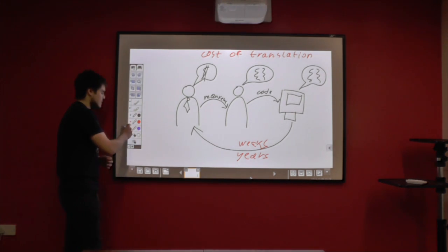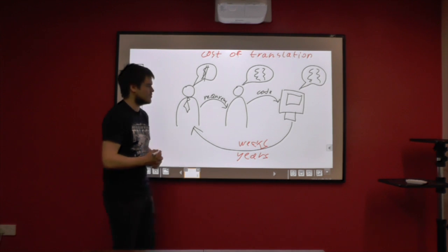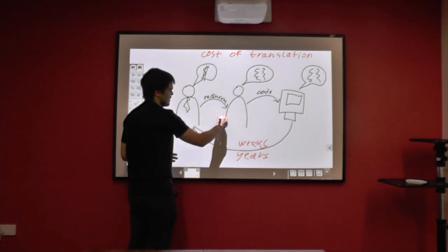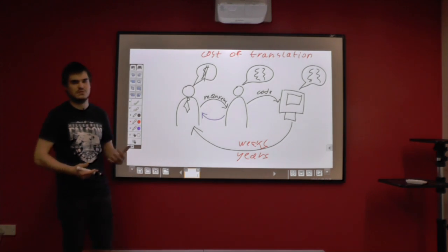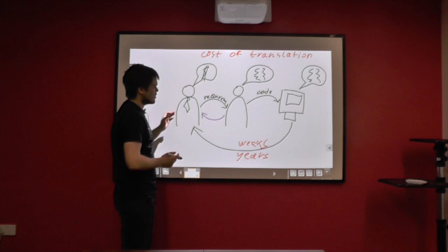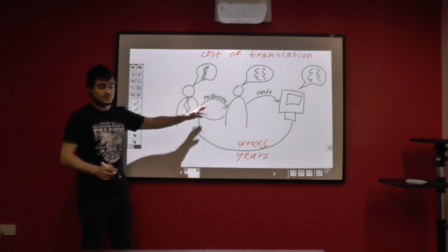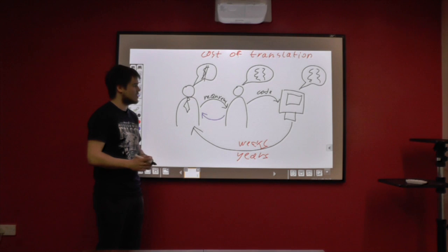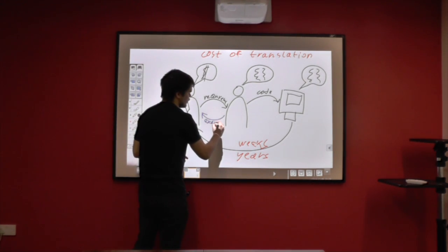So the way BDD tries to solve this problem is by creating this feedback loop between developer and the business, and creating this engagement or interaction where whenever developer gets a new requirement from the business or asks for a new requirement from the business, developer asks for examples of this requirement.